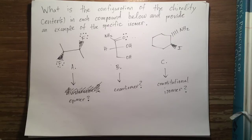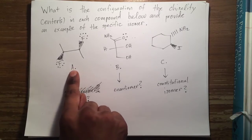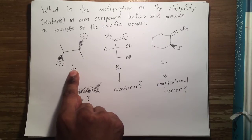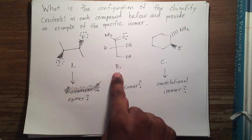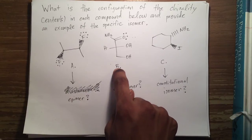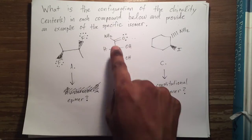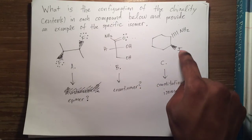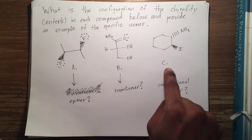If you look at this problem, we have three unique compounds. In compound A, we have two alkyl halides — two fluorines. In compound B, what makes it unique relative to the others is it has an amide functional group. And compound C has an amine and an alkyl halide in it.